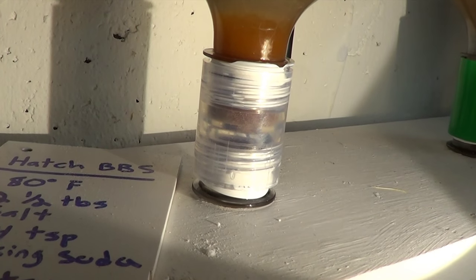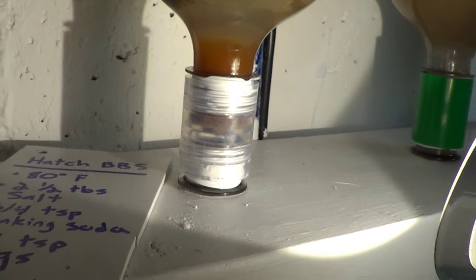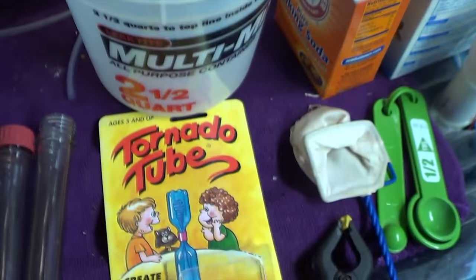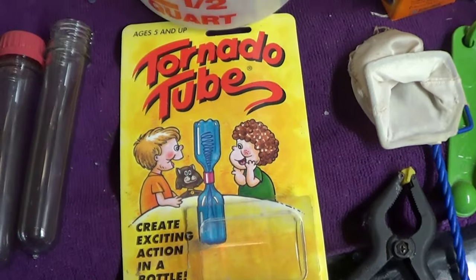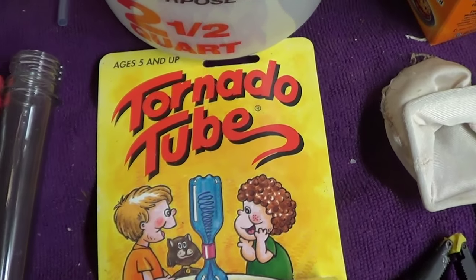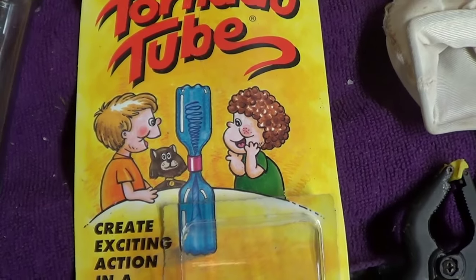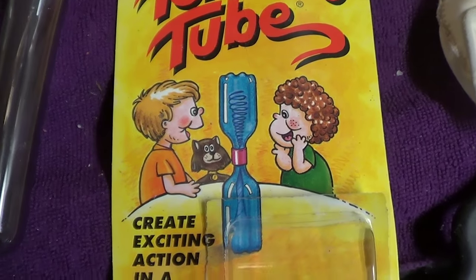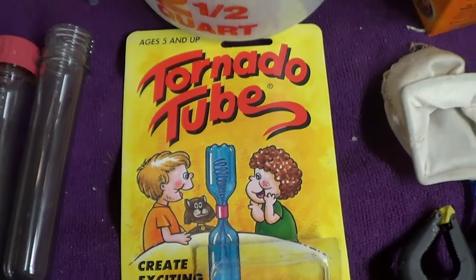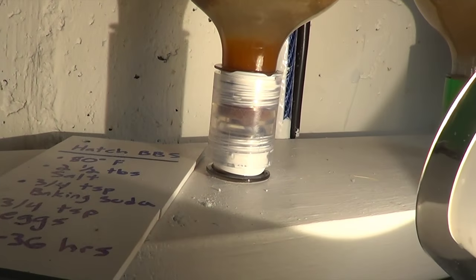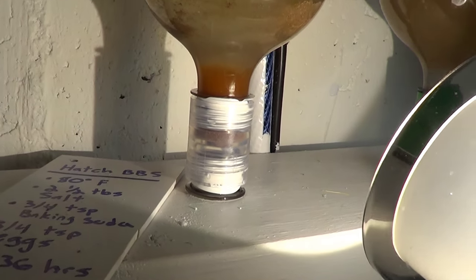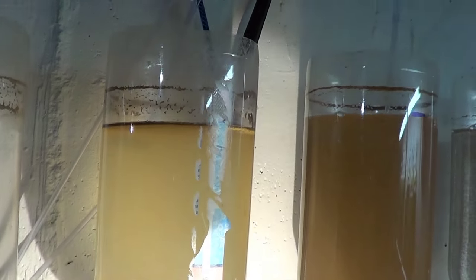And you can see an example of that right here. And the thing that I'm using to connect those is a tornado tube. Anyone who's familiar with science and science projects should know about the good old tornado tube. You attach two bottles together, you swirl it around and you get a little tornado. I figured it would be the perfect little product to attach my two bottles together, and indeed it is.